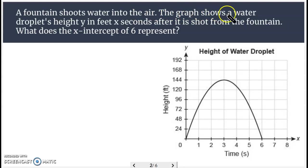On this one it says a fountain shoots water in the air. The graph shows a water droplet's height y in feet x seconds after it's shot from the fountain. What does the x-intercept of 6 represent? So that y-axis is how high the droplet is and the x-axis is time.